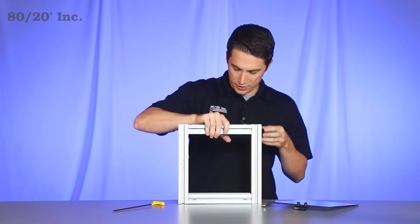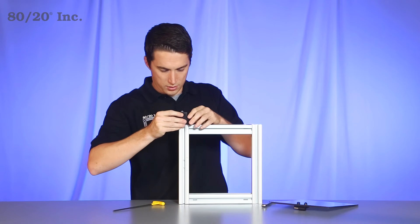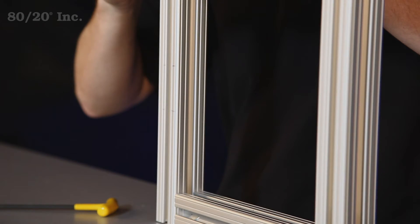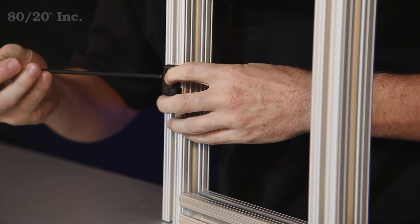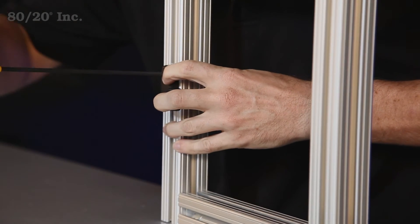We'll put the T-slot side onto the frame itself, slide it in there just like that, find the place on the frame that we want it, and we'll tighten it down.